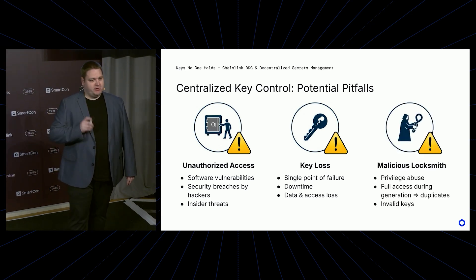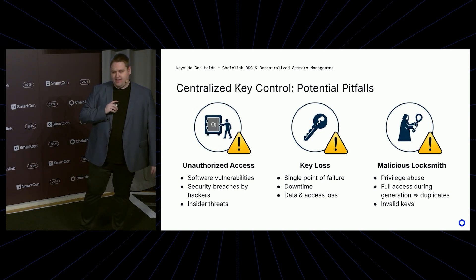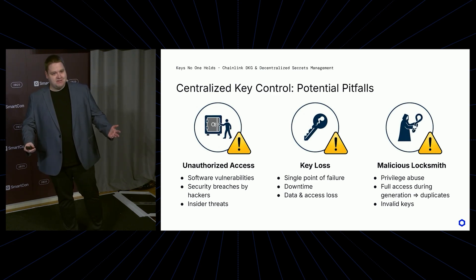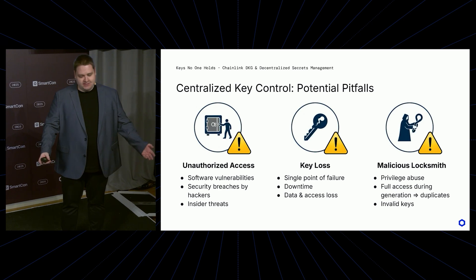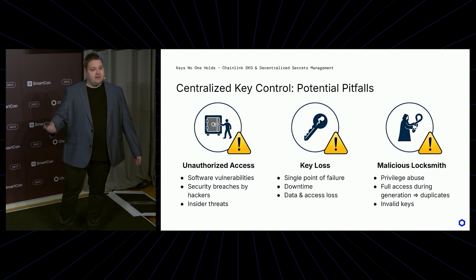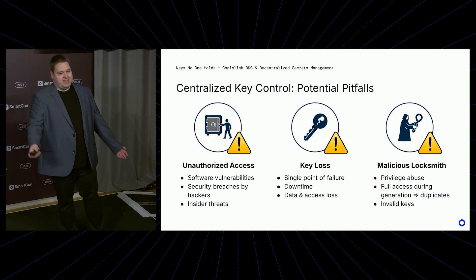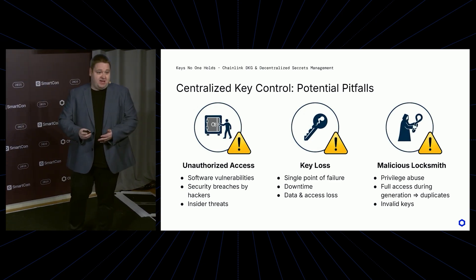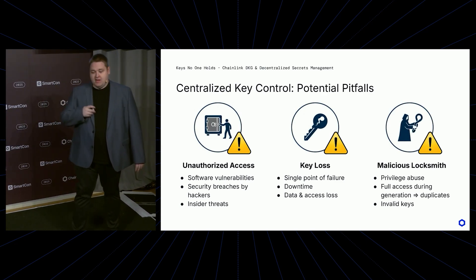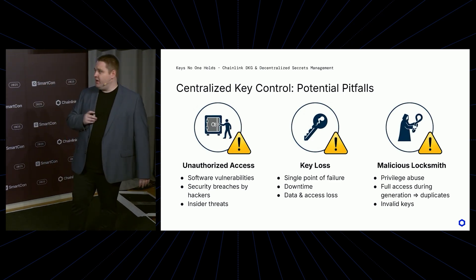One more thing, which is typically not mentioned, is what I call here on the slide a malicious locksmith. When you think about physical keys, somebody actually makes those physical keys. Those parties that make the physical keys — the locksmith — are in fact trusted parties in the overall system. They can make a duplicate before they give you the key. They could even make a key that doesn't work. For some applications you notice on first use, but for a long-term backup, that might be a critical flaw. So by decentralizing the management and control of keys, we tend to avoid all of those problems.